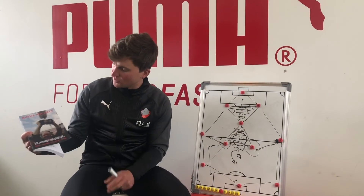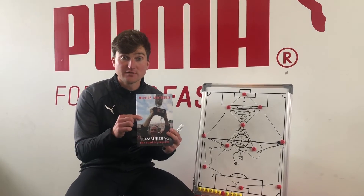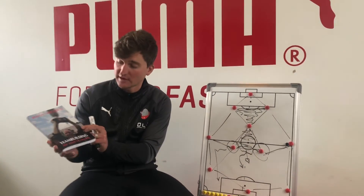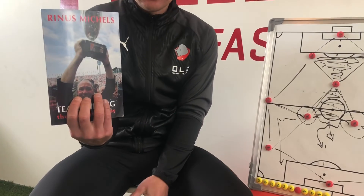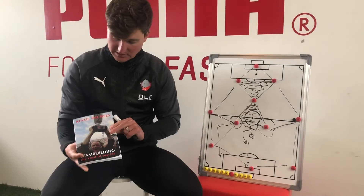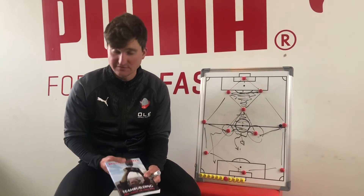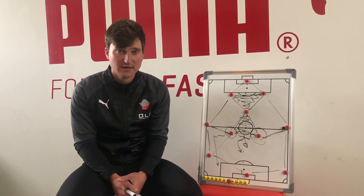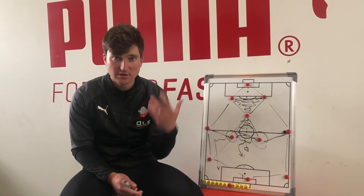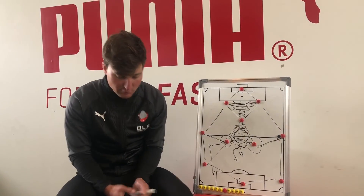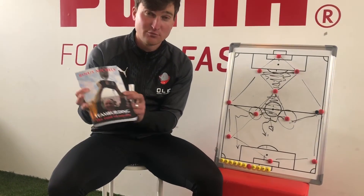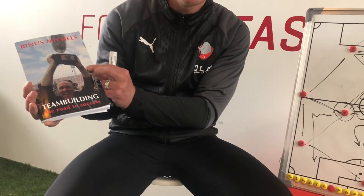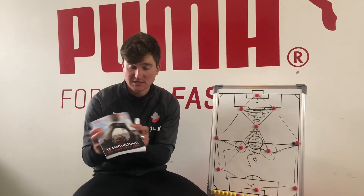We'd like to talk about a favorite book of ours: Team Building by Rinas Michaels. Rinas Michaels was made famous for those Dutch teams in the 1970s, in the early days of Barcelona in the 1980s, and he was a key influence on Johan Cruyff, who later went on to influence Pep Guardiola — and we obviously know about Pep and the work he's done at Barcelona, Bayern Munich, and today at Manchester City. We really recommend this book. It's Team Building: The Road to Success by Rinas Michaels, and it makes the game sound really simple — and as they say, simplicity is genius.